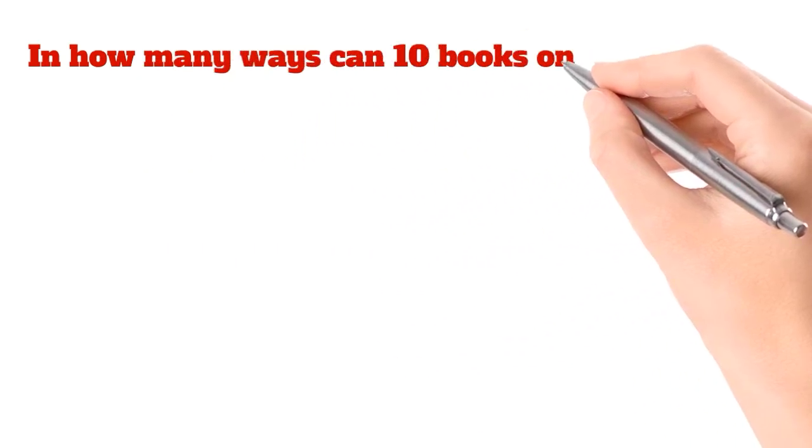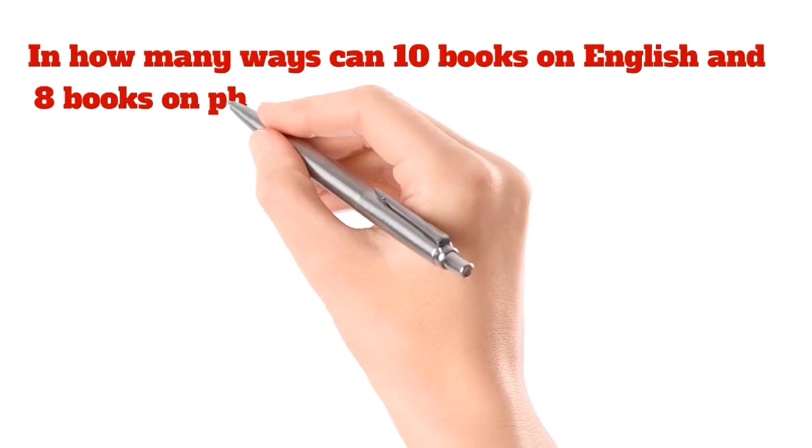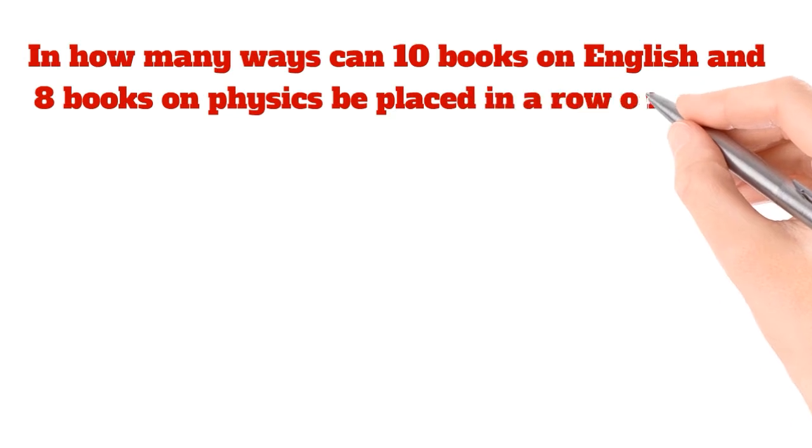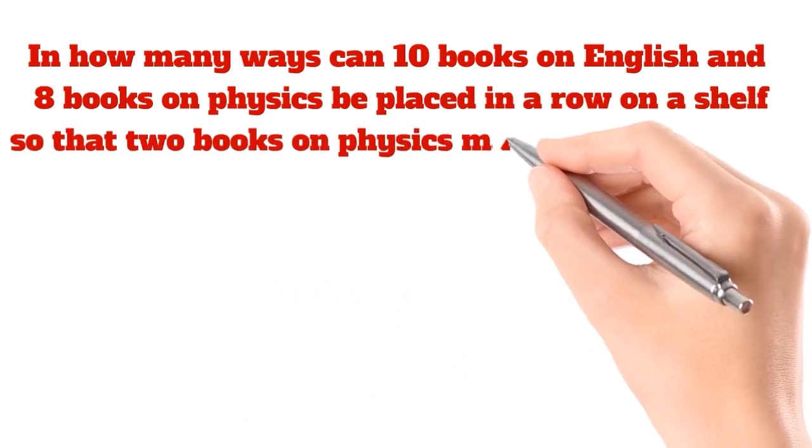In how many ways can 10 books on English and 8 books on Physics be placed in a row on a shelf so that 2 books on Physics may not be together?